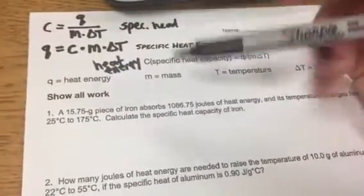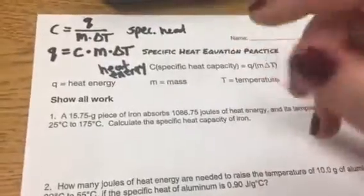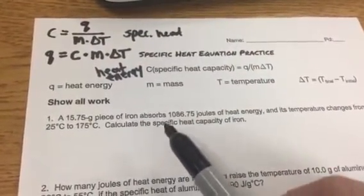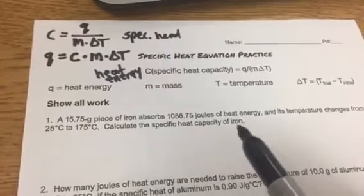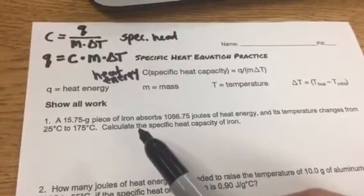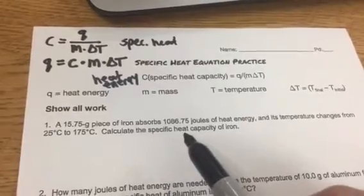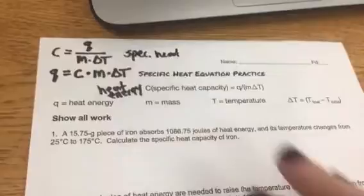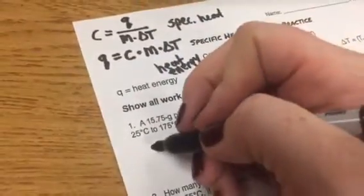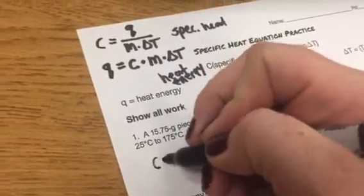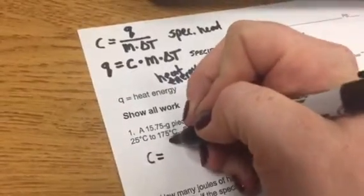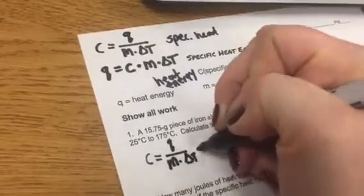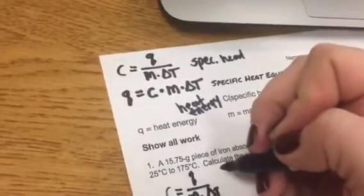Each of these problems are going to ask us to find a different thing. This first one gives us some information and then says calculate the specific heat capacity of iron. It's asking us to find specific heat, so we know we need to use that top equation. I'm going to rewrite that equation here.